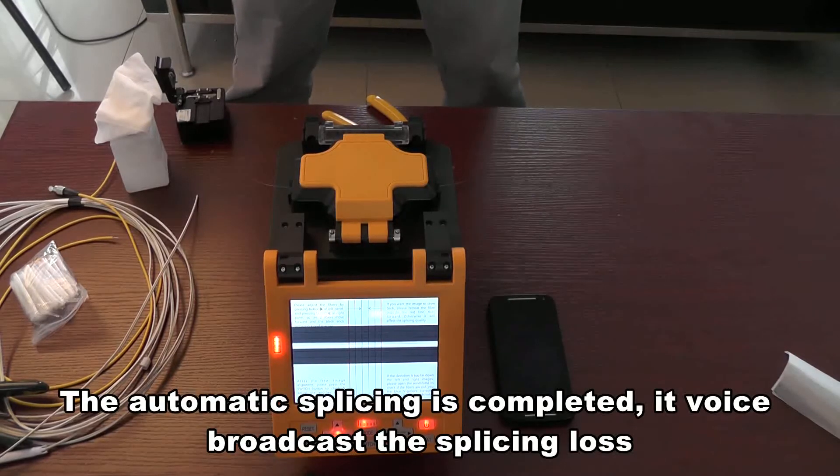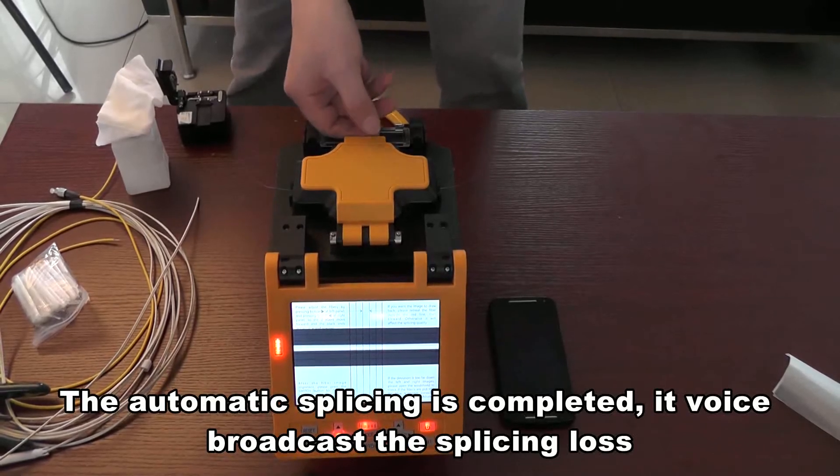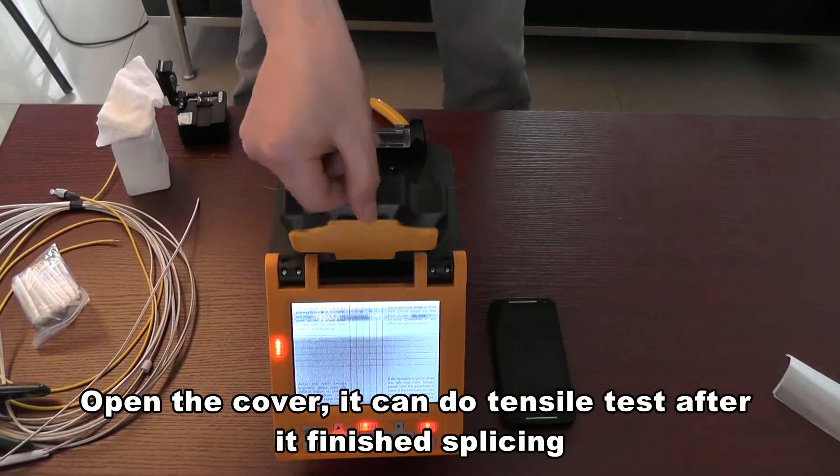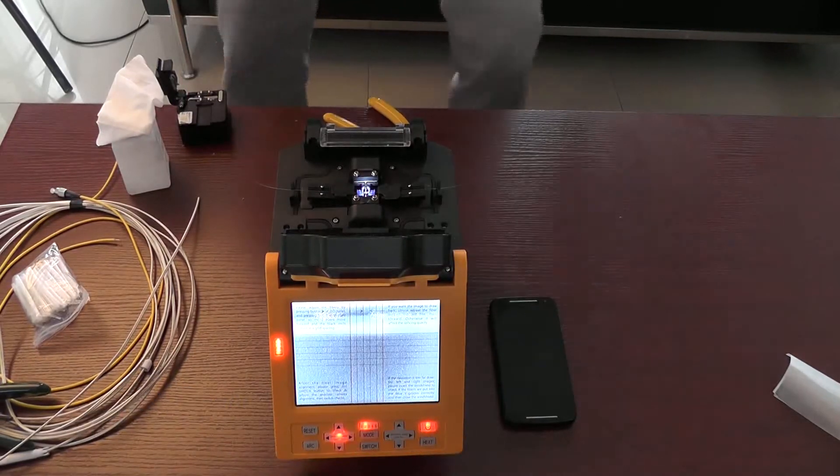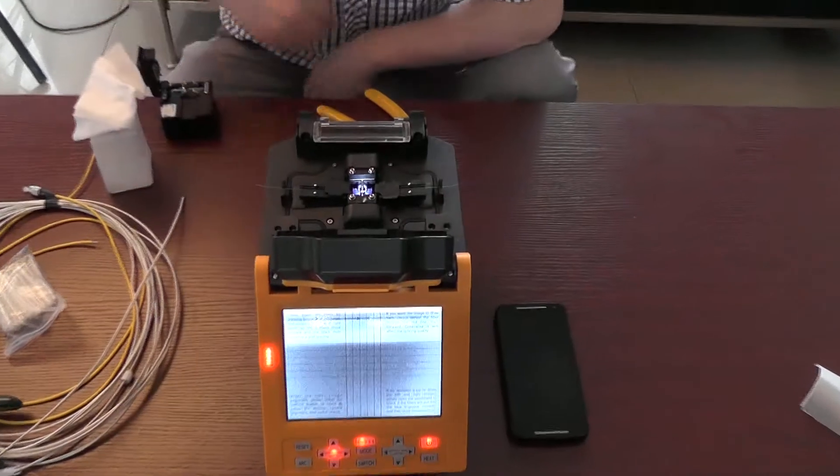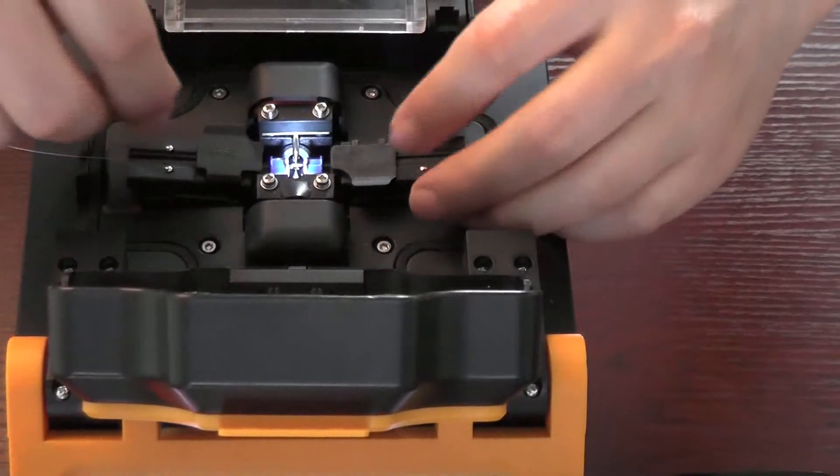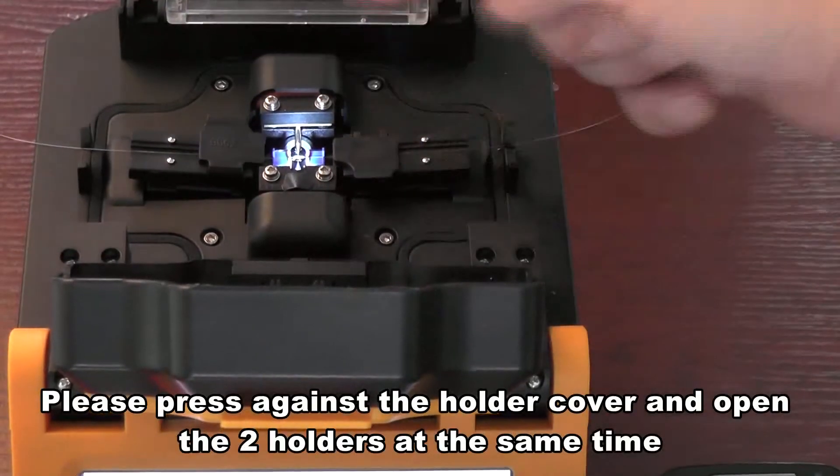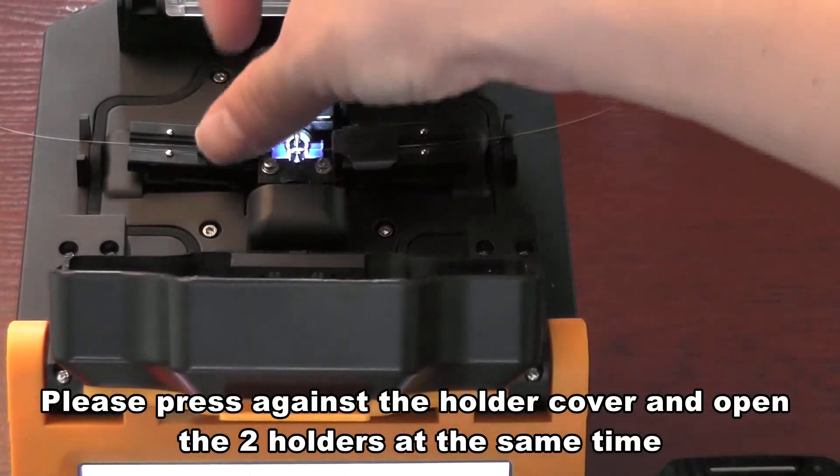The automatic splicing is completed. It voice broadcasts the splicing loss. Open the cover. It can do tensile test after it finished splicing. Please press against the holder cover and open the two holders at the same time.